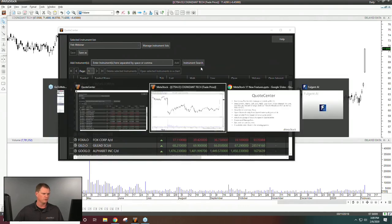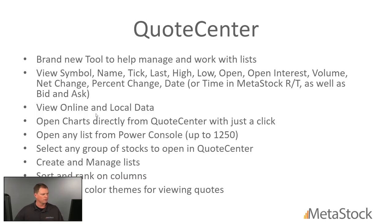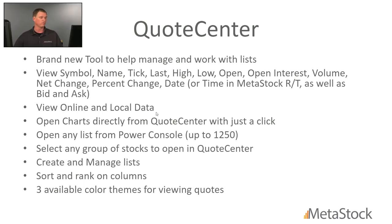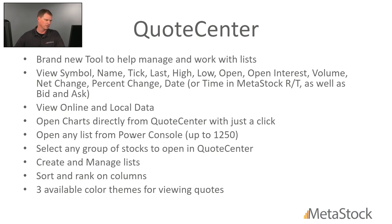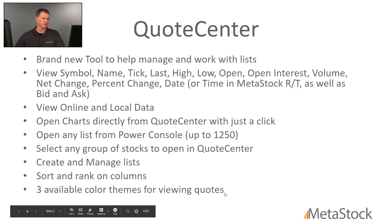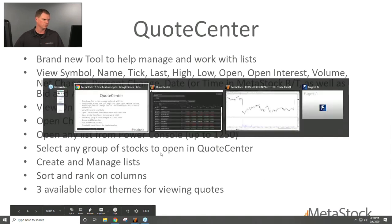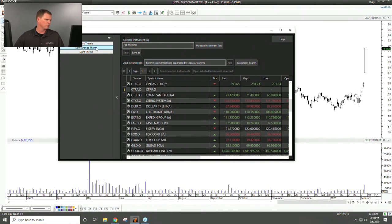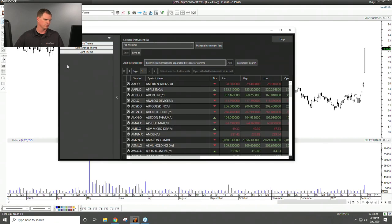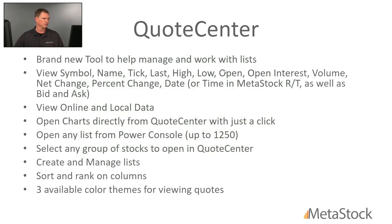One note: even if you're not using Reuters DataLink or Xeon as your data feed, you can use your own local supplier or pull data from local folders directly. You can open charts, open any list, select groups, create and manage lists, sort and rank by columns, and choose from different color themes — dark, orange, and light. I personally prefer dark.